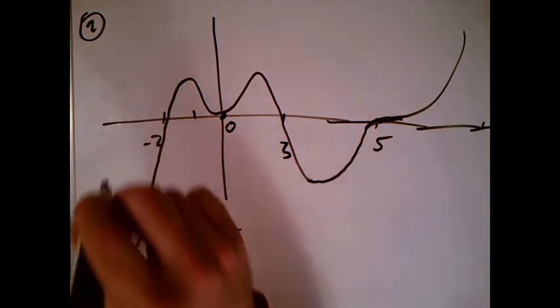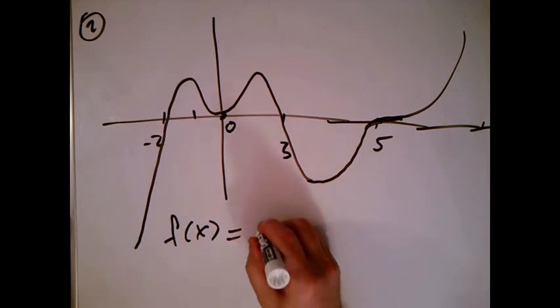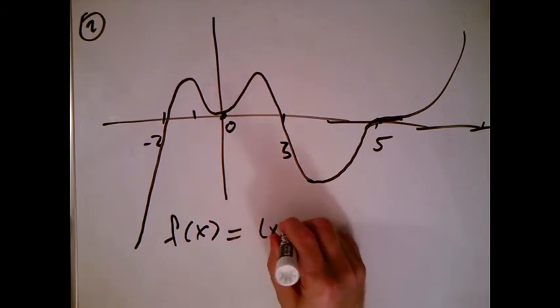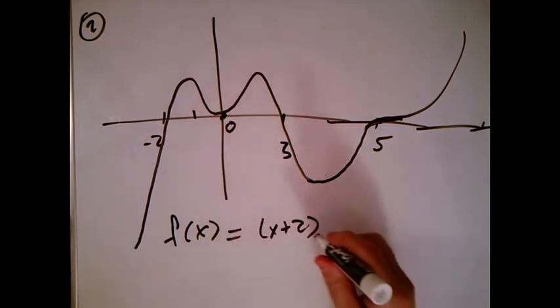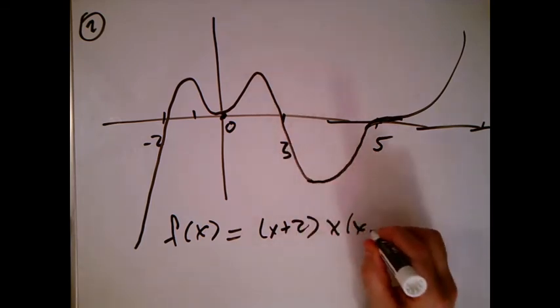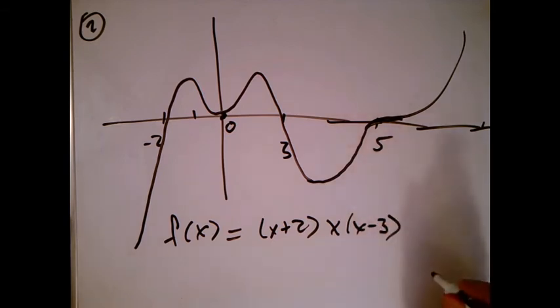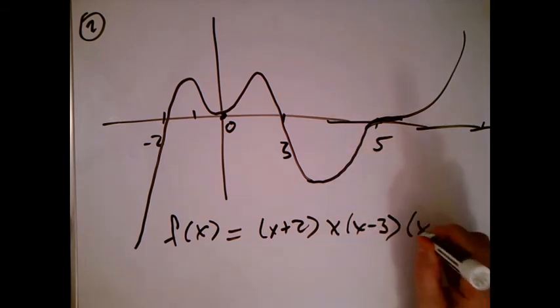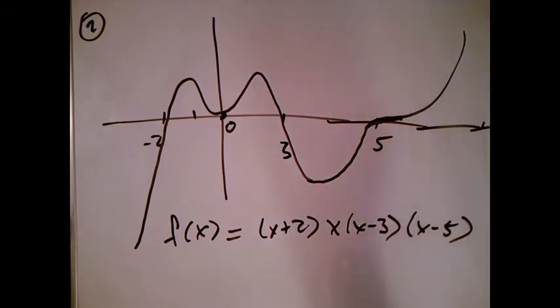So that negative 2 here is a root, so that x plus 2 must be a factor. We see that 0 is a root, so that x has to be a factor. We see that 3 is a root, so that x minus 3 has to be a factor. And we see that 5 is a root, so that x minus 5 has to be a factor as well.